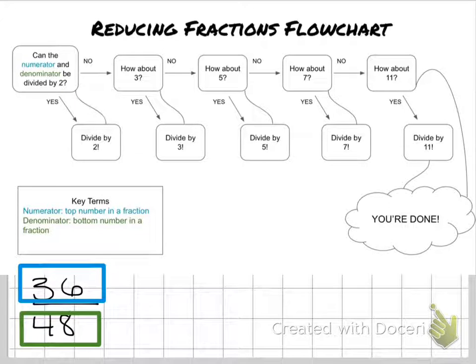However, you might notice this fraction, 36 over 48, or 36 48ths. These numbers are quite a lot larger, and I don't know about you guys, but one thing that I sometimes forget are my larger numbers where fractions might have some things in common. So what I'm going to do is I'm going to use this flowchart to help myself reduce this fraction the easiest way I can think of.